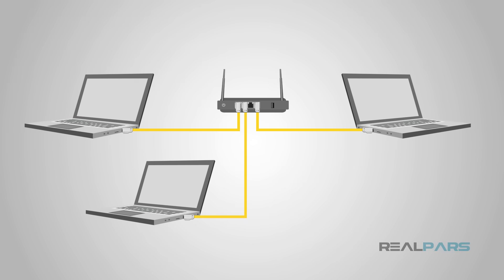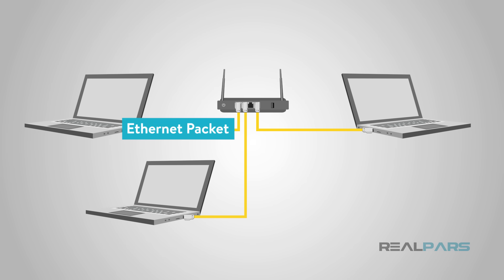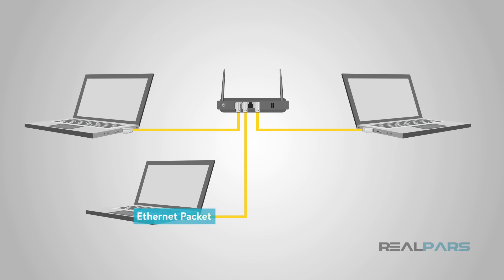Now that we have said that Ethernet is a protocol versus a physical connection, let's get a little into the weeds of some of the terms. Most communications to our computers or devices travel over one or more networks via something called a packet. Since there's a multitude of devices that may want to send and or receive data, there have to be some common rules for sending and receiving these packets. This is where the protocol comes in.